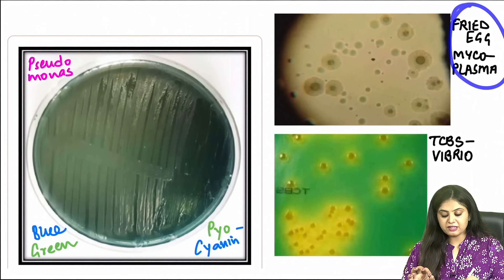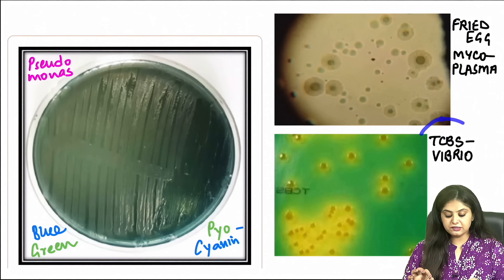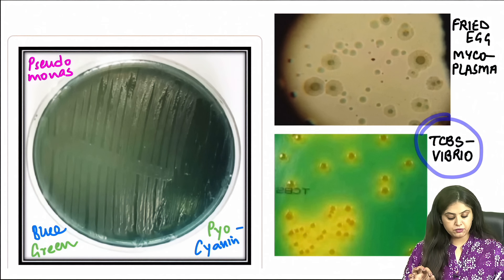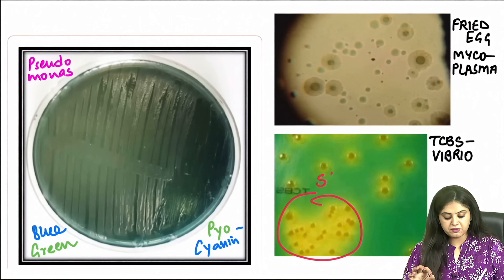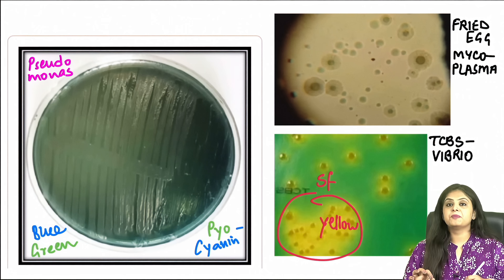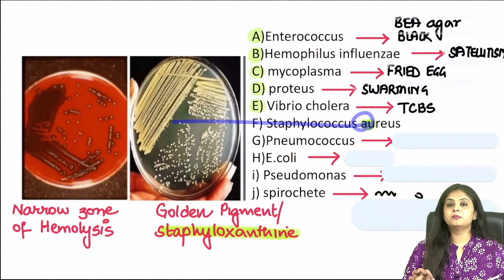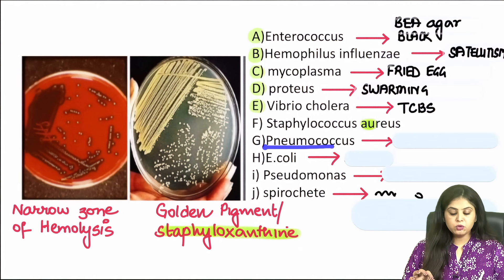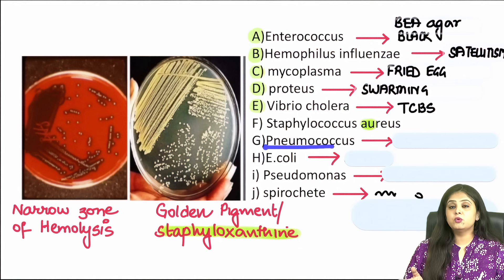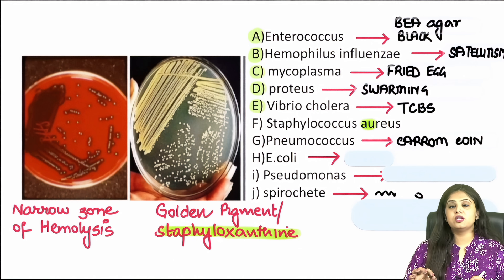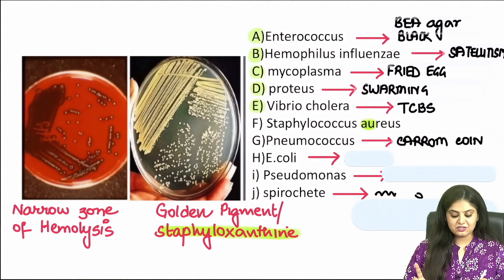This is the Mycoplasma fried egg colonies you are seeing, and this is the TCBS of Vibrio where the sucrose has been fermented, giving a yellow color. Moving on, Staph aureus shows the golden color pigment already mentioned. Pneumococcus, also known as Streptococcus pneumoniae, shows a characteristic carom coin or draughtsman colony, seen in the image and MCQ discussion.